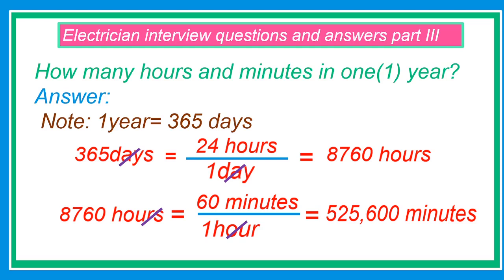Next question: How many hours and minutes in one year? Note, one year equals 365 days. 365 days times 24 hours over one day. We are going to cancel the days to become hours. 365 times 24 hours equals 8,760 hours. 8,760 hours times 60 minutes. To become minutes, we are going to cancel the hours. 8,760 times 60 minutes equals 525,600 minutes.